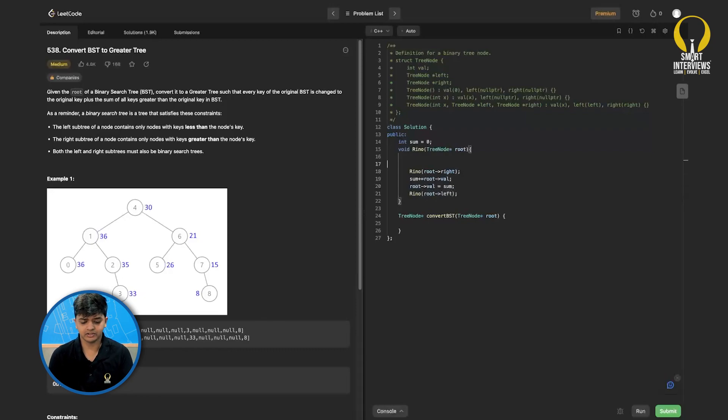This will be our main logic. Base condition if root equals to null, simply return. So what should we do in the actual convert BST function? I should simply call the reverse in-order function on the root and then I can simply return the root. Let's run this code.